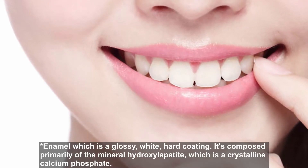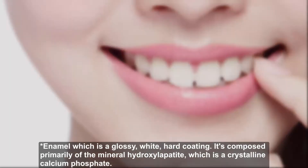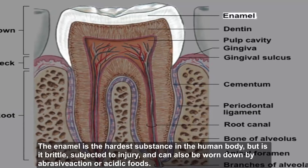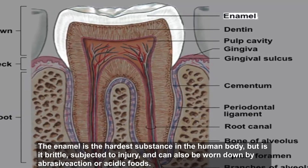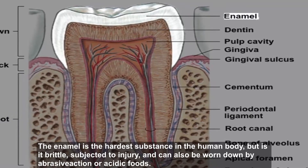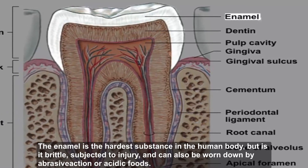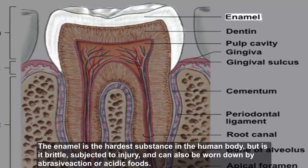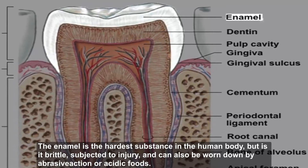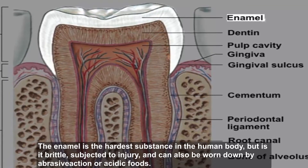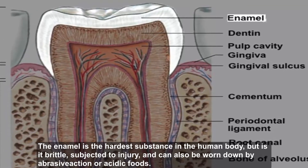Enamel is the hardest substance in the human body, but it is brittle, subjected to injury, and can also be worn down by abrasive action or acidic foods.